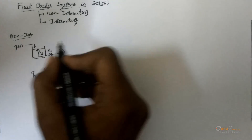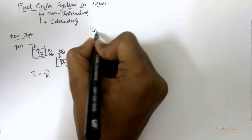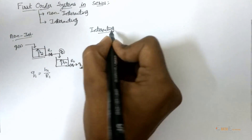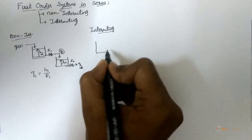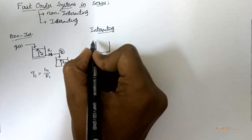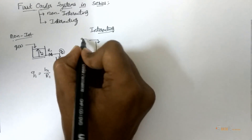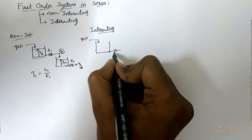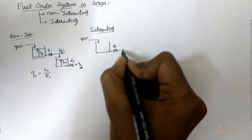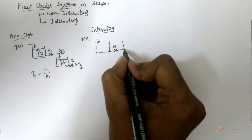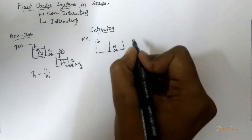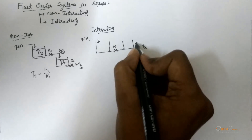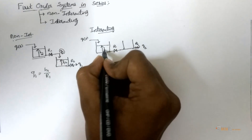Now, another type of system is interacting. Let me consider a liquid tank having flow rate Q(t) and the outlet resistance is R1, which is connected to another tank having the outlet flow rate Q2 and resistance R2 with heights H1.